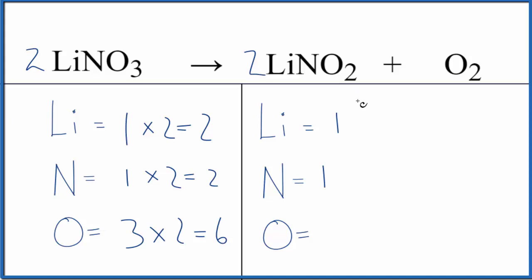So we have two times one, that'll give us two. Two times the one nitrogen there, that gives us two. And then we have two times two, that's four, plus we have the two here. And that works out really nicely because now this equation is balanced.